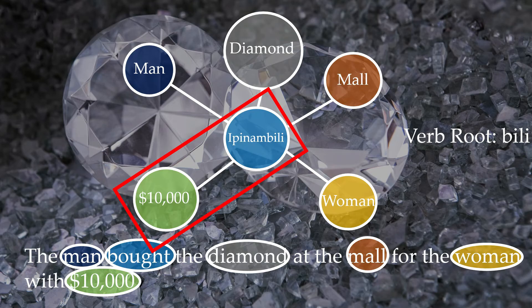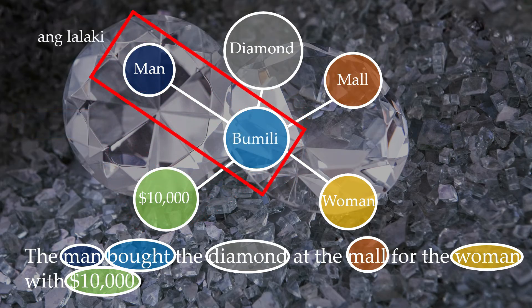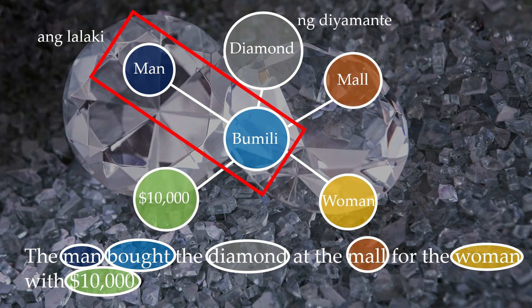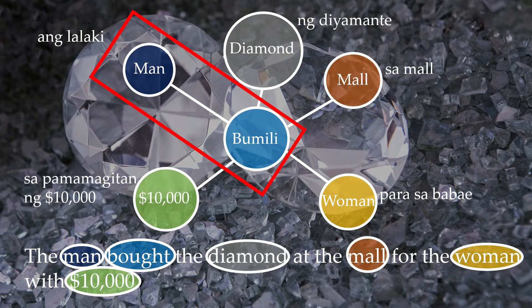Let's look at how the nouns change. If we move the focus to the man — ang lalaki — because the man is the one doing the action and being focused, then the verb is bumili. The diamond, because it's not being focused, is nang jamante. The mall — sa mall — it's not in focus. For a woman — para sa babae. And then using $10,000 — sa pamamagitan nang $10,000. This is the structure you use when the man is in focus.